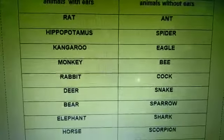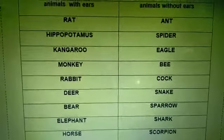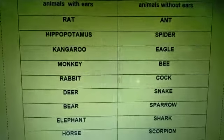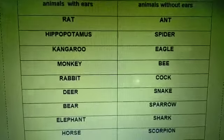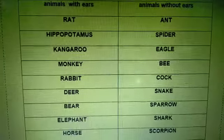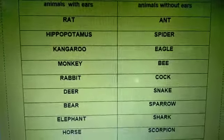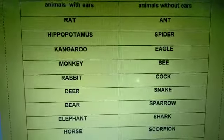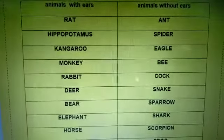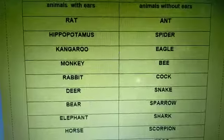The first table was animals with ears and animals without ears. Here are the animals with ears and without ears.